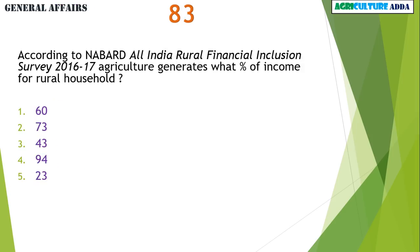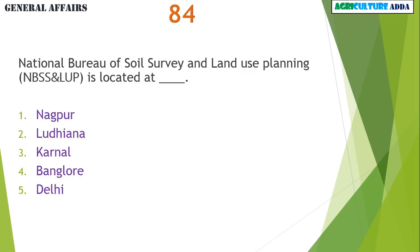According to NABARD All India Rural Financial Inclusion Survey 2016-17, agriculture generates what percent of income for rural households? 23%. National Bureau of Soil Survey and Land Use Planning is located at Nagpur.